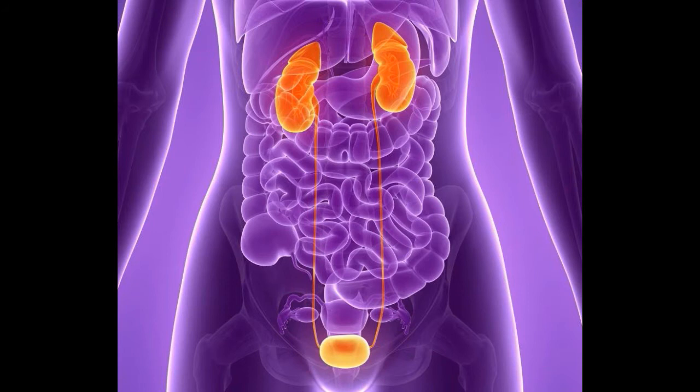The Pouch of Douglas is the lowest area of the peritoneal cavity in women. It is a small extension of the peritoneal cavity which lies between the uterus and the rectum.